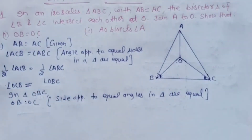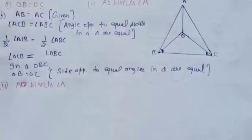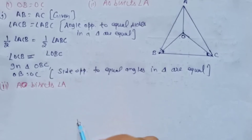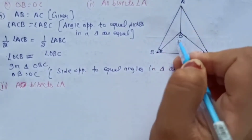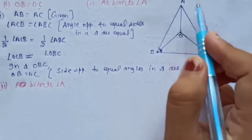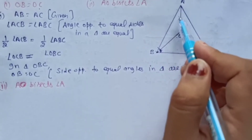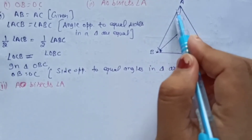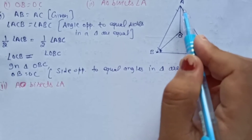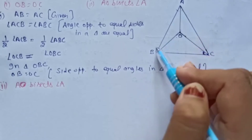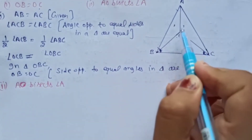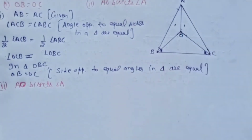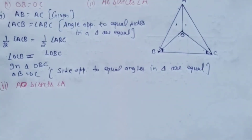Ab hum karte hain iska second part. Iske liye problem mein bataya hua hai: AO bisects angle A. Hume prove karna hai ki yeh jo AO wali line hai, yeh angle A ko bisect karni hai. Iske liye hum konsi triangles leke chalenge? Triangle OAB aur triangle OAC. In dono ko hum congruent prove karenge, phir easily CPCT se ho jayega.